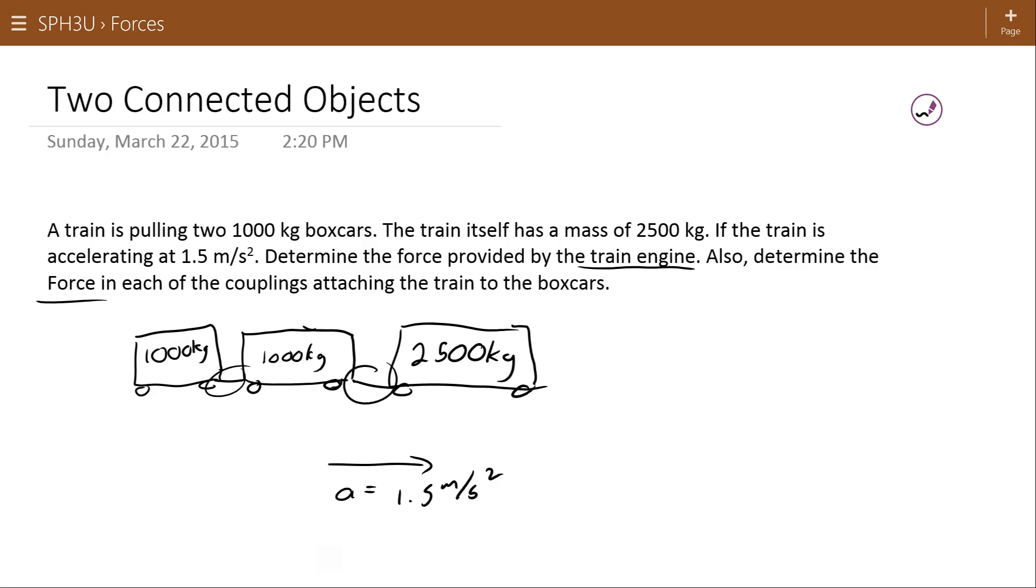So first of all, to find the force of the train engine, we're going to consider this system as one big whole. So that's 2,500 kilograms plus 1,000 plus 1,000 for a total mass of 4,500 kilograms. There's a force of gravity and a normal force. And we're assuming those two forces are equal and opposite. The train is running on level track. Those two forces are there, but sort of ignorable.